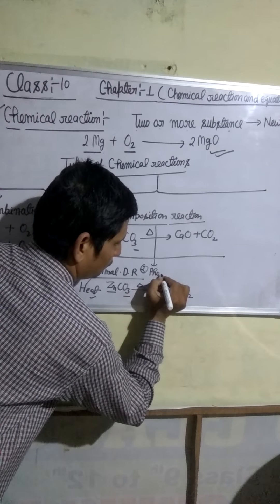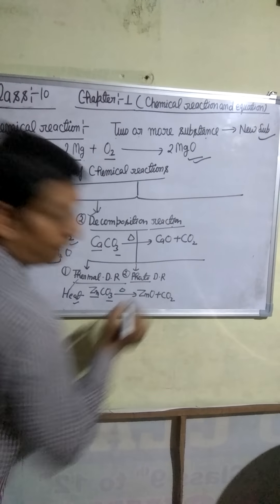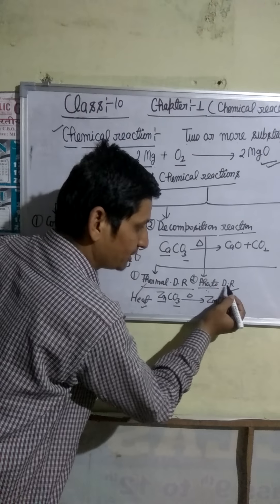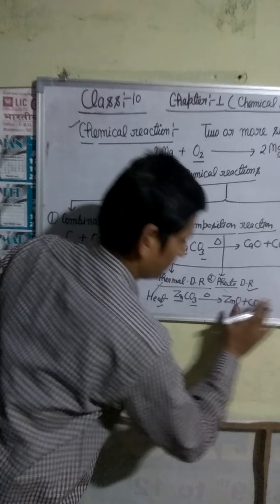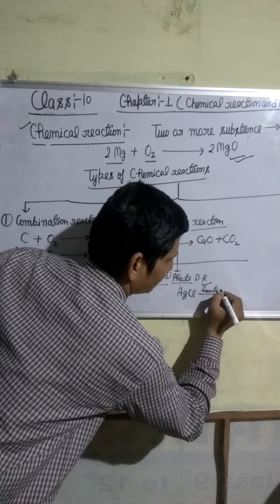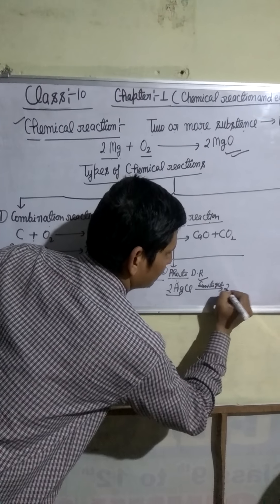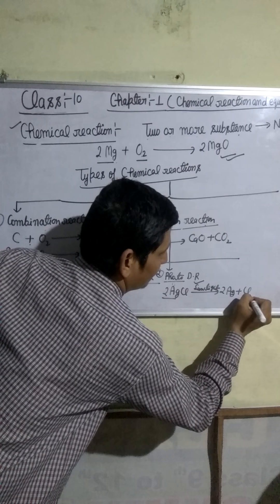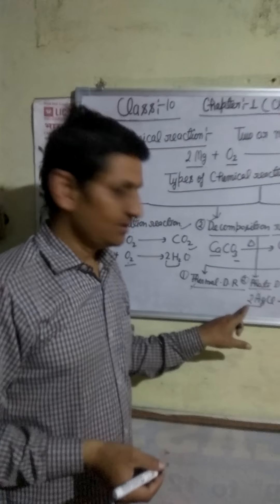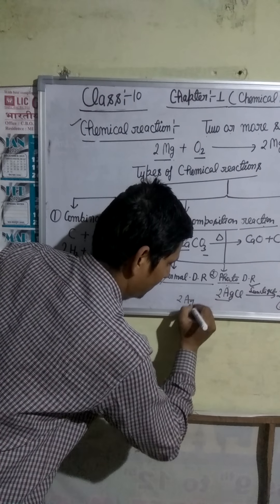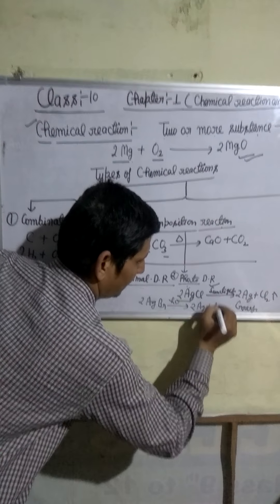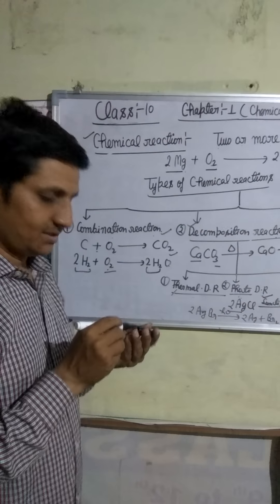Next is photo decomposition reaction. Photo means light — decomposition reaction which takes place by light is called photo decomposition reaction. For example, silver bromide decomposes to give silver metal of grey colour and bromine vapour.